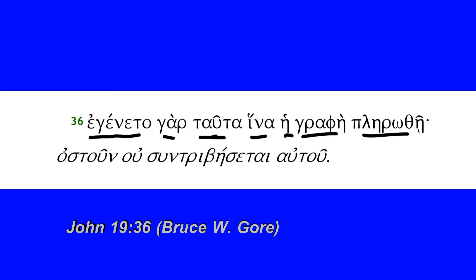'He graphe' — the scripture. 'Plērothe' from 'plēroō' — it means to bring to fulfillment, to bring to completion. And so John sees all of these events as fulfilling the anticipated Old Testament expectation of Messiah.